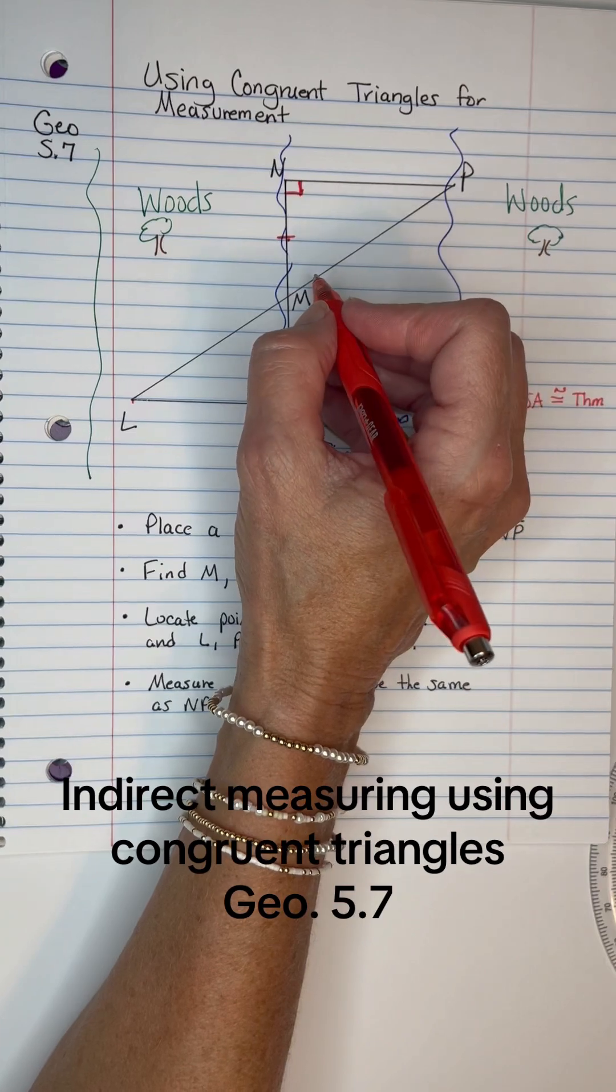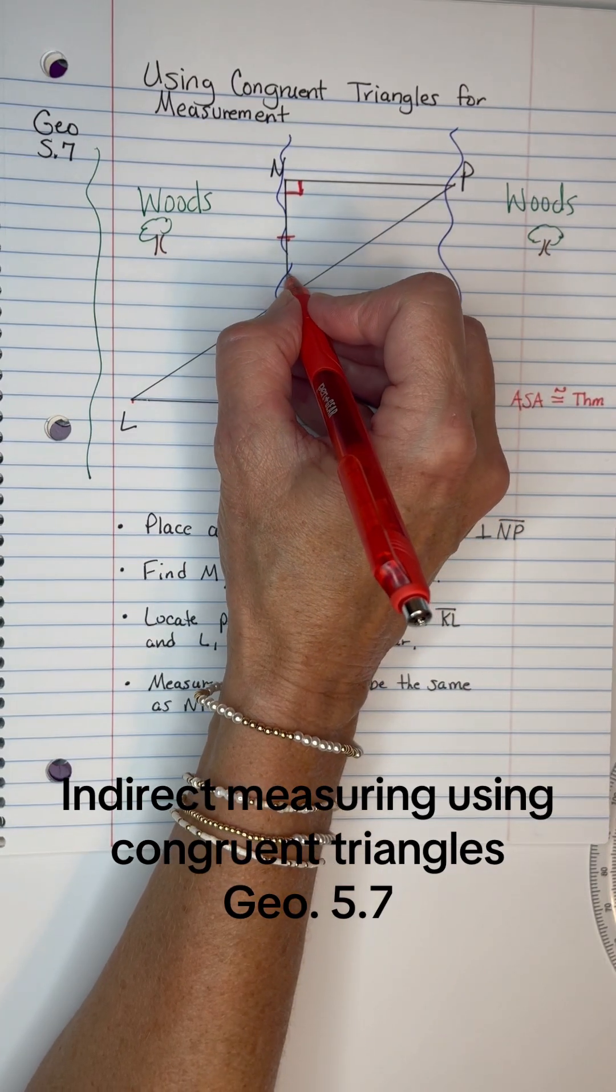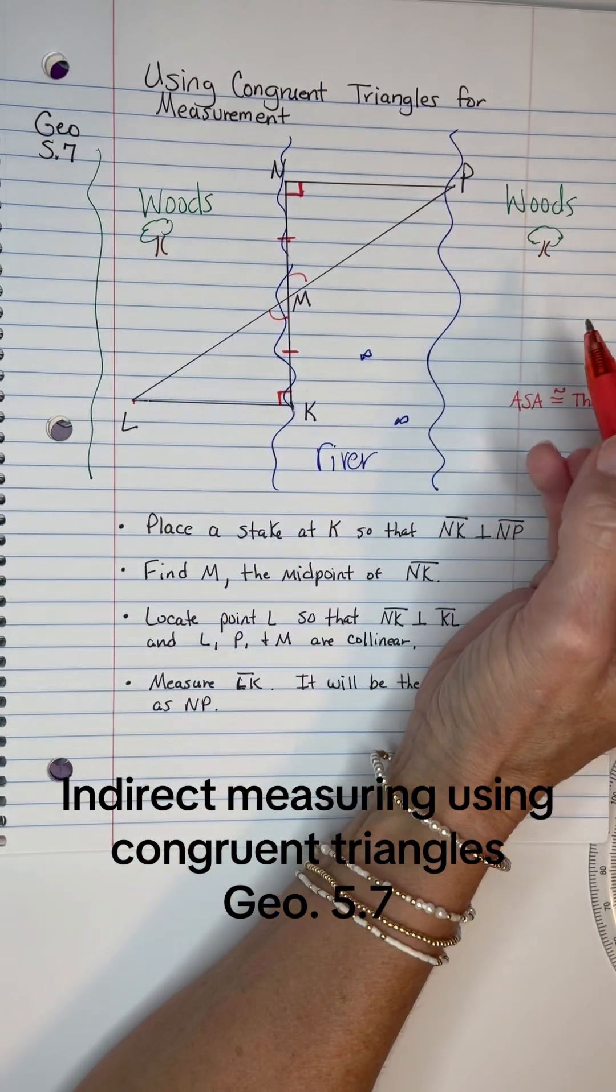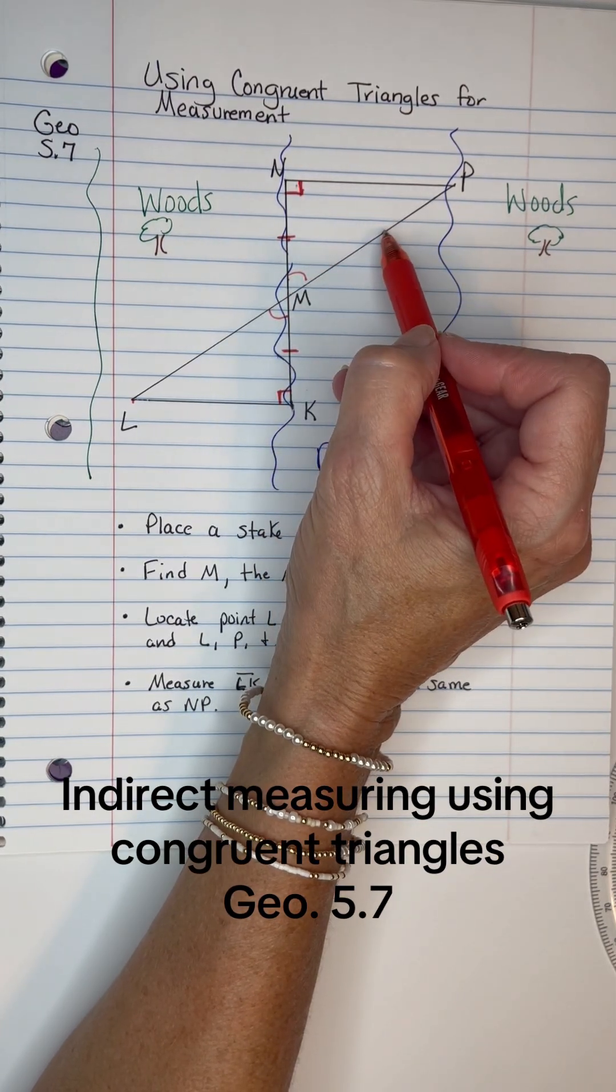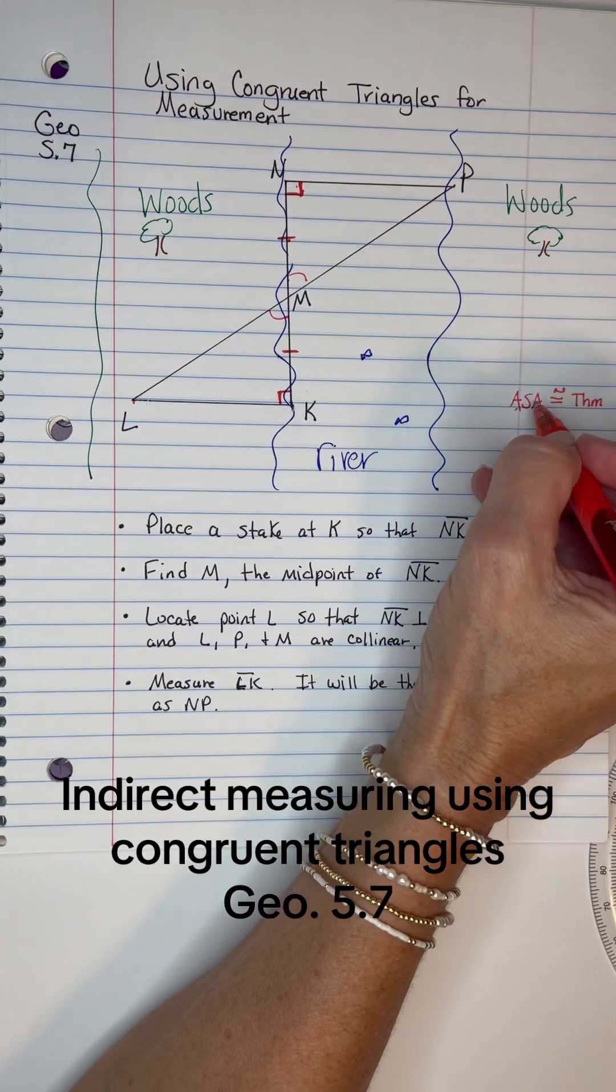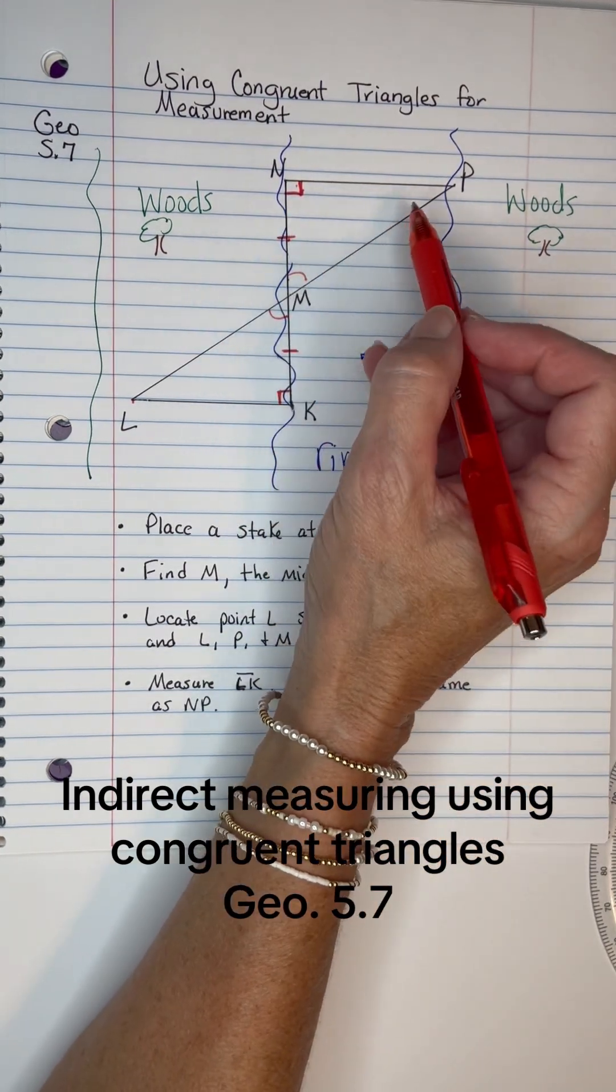So by angle-side-angle—you can't use hypotenuse-leg because we don't know the hypotenuse—but by the angle-side-angle theorem, these triangles are congruent.